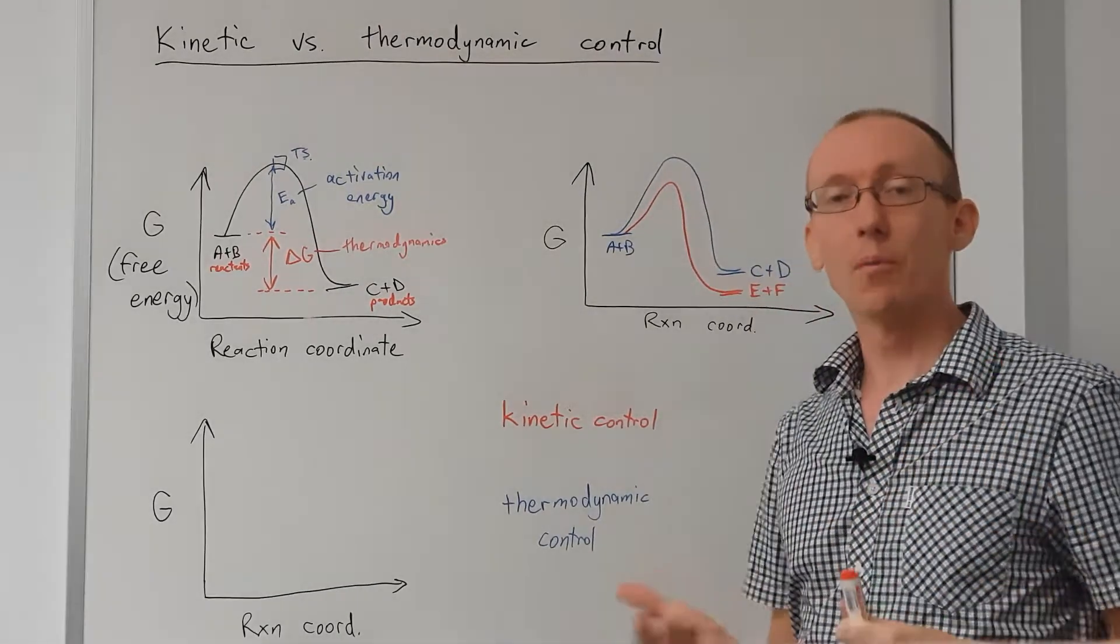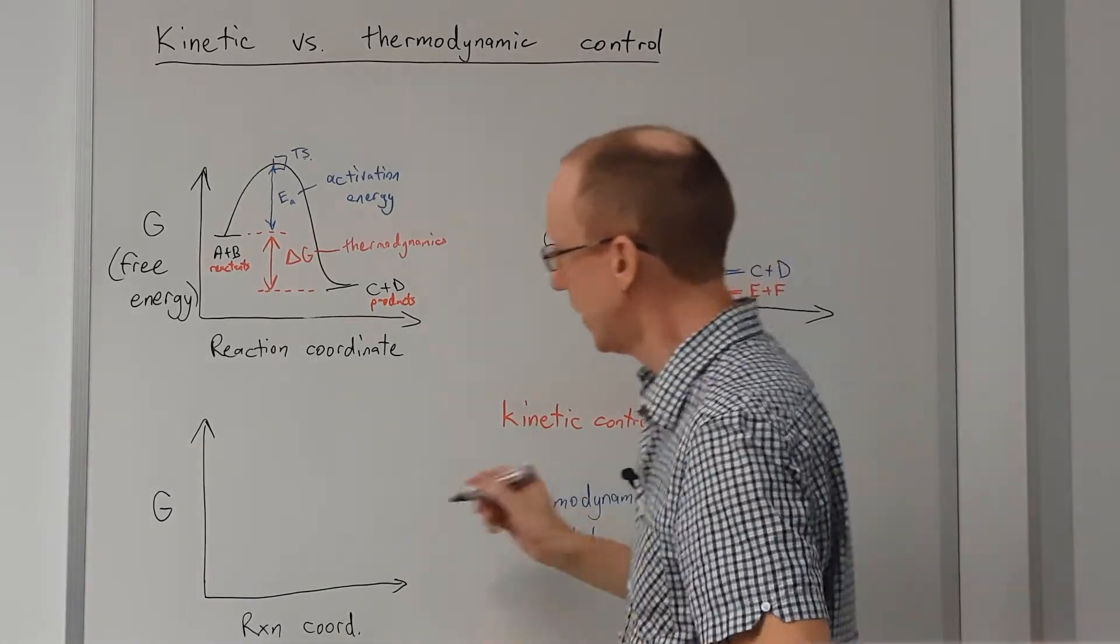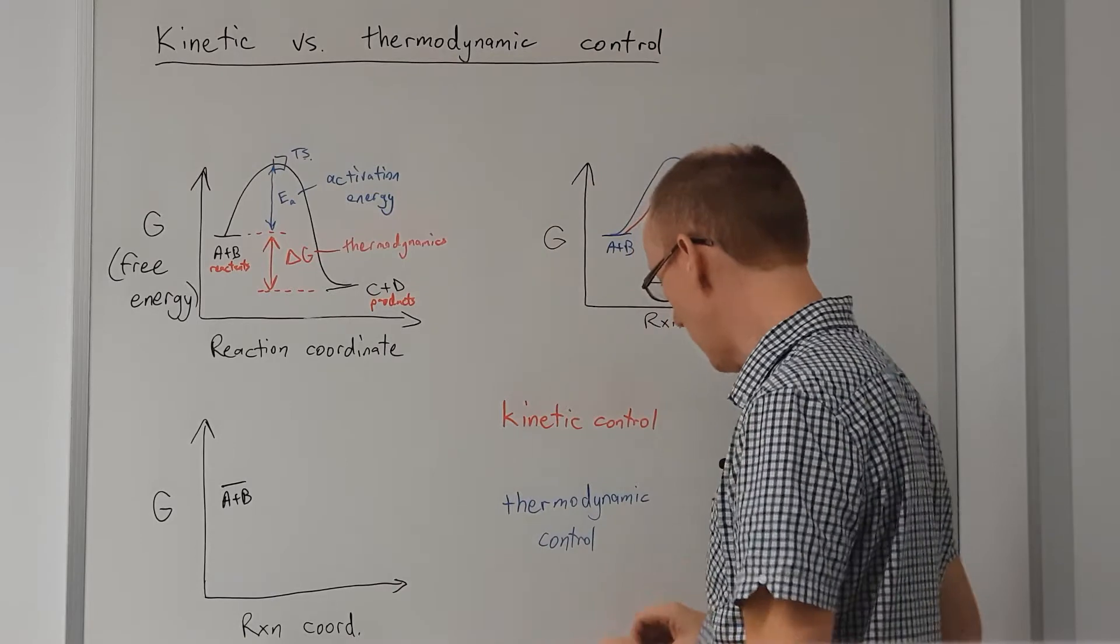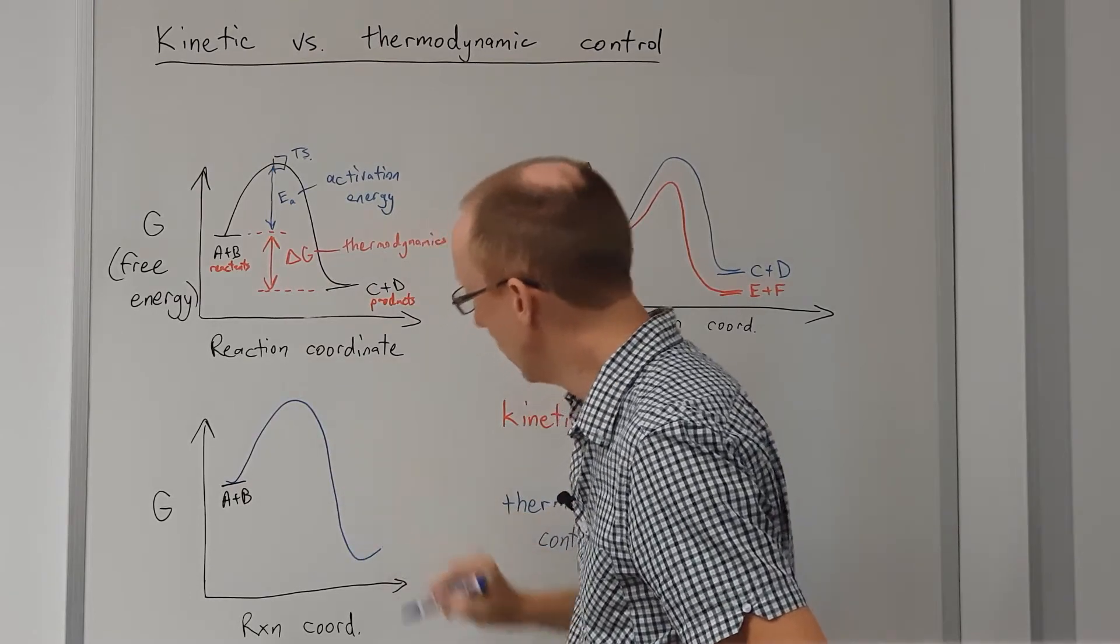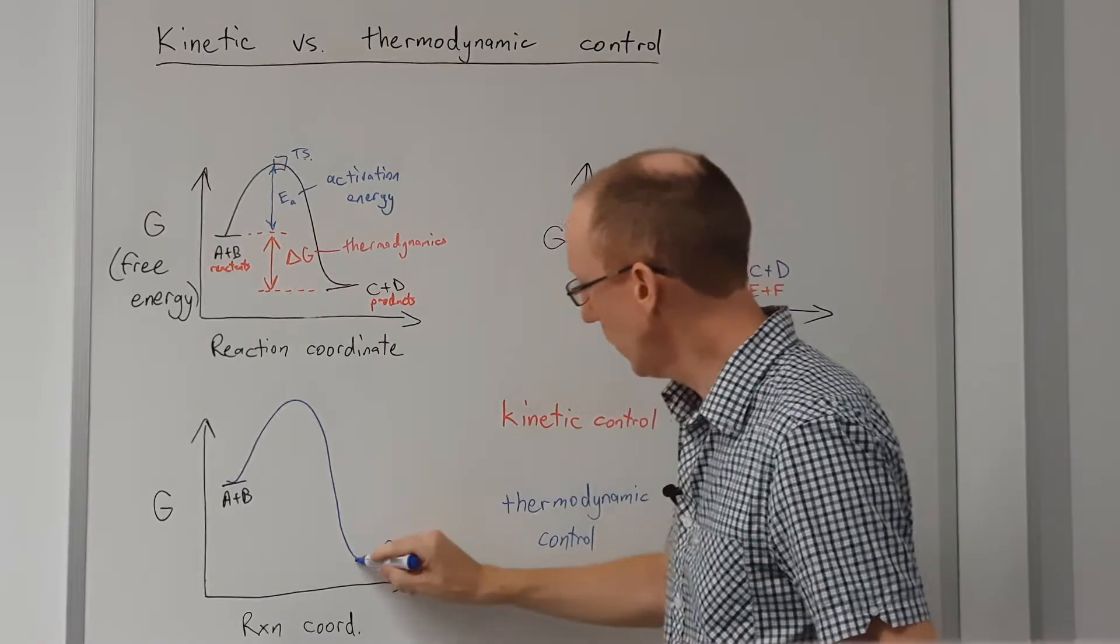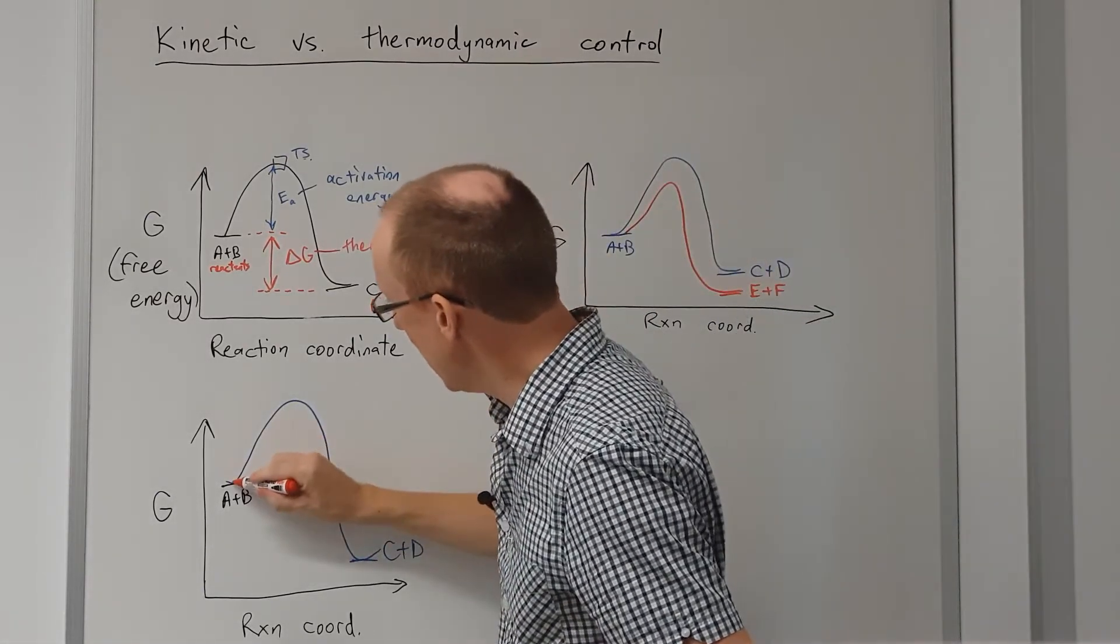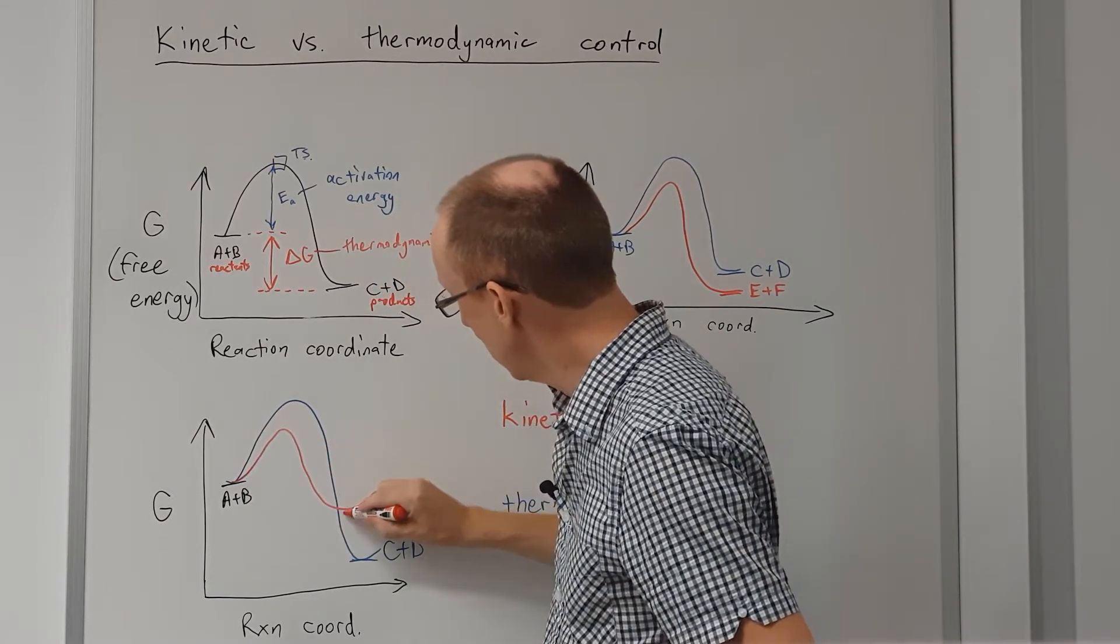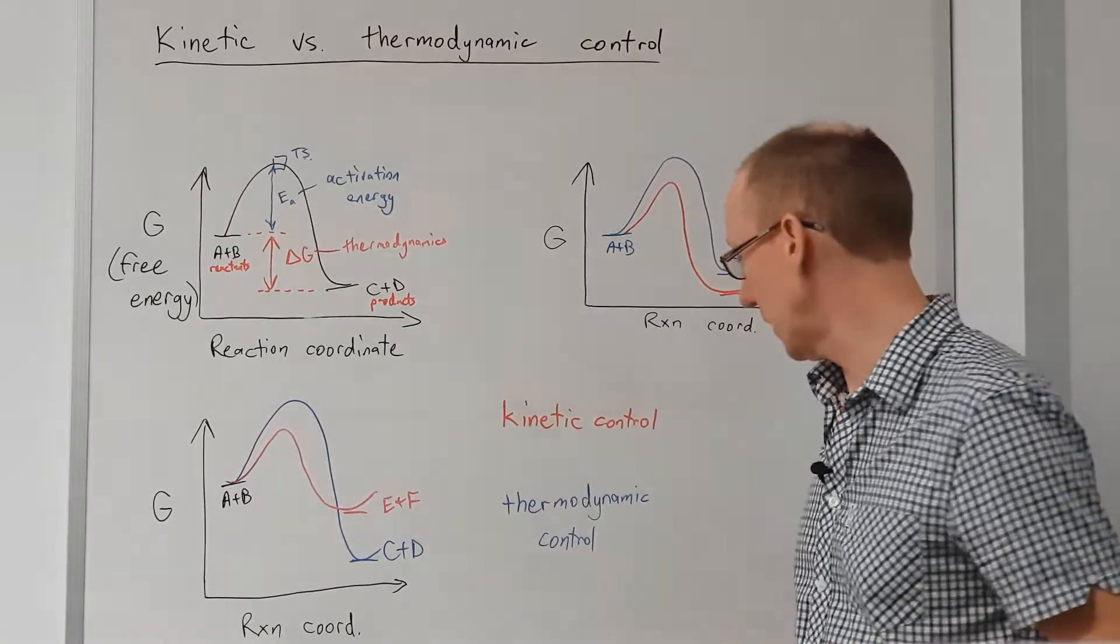Okay, things get a little bit more interesting when we have different profiles. So for example, what if we start off with our reactants and then one pathway goes through an energy profile like this, to give us one set of products. And then the other possibility goes through a lower activation energy barrier but gets to less stable products. So how do we think about this particular situation?